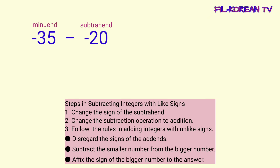Ngayon, itong subtrahend na negative 20, papalitan natin ang sign. Itong negative sign, gagawin nating positive sign — magiging positive 20 ito. Then, itong subtraction operation, papalitan natin ng addition. Magiging plus ito.